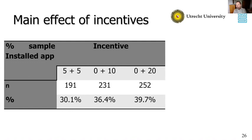On incentives, we find effects consistent with the existing literature: if you pay people more — twenty euros — you get a higher response rate, roughly 10% higher than offering five plus five. What was quite interesting was the difference between the first two conditions. In the first condition, people received five euros for installing the app and five euros for completing — the same total as the ten euros in the second condition. Yet the response rate was higher in the second condition. Our hypothesis is that ten euros just sounds like more than five plus five, even though the amount is the same.